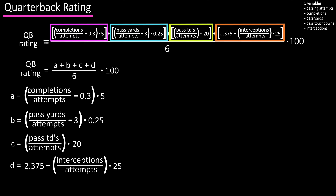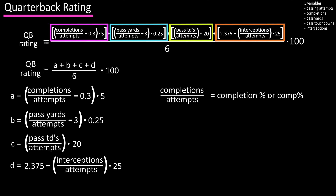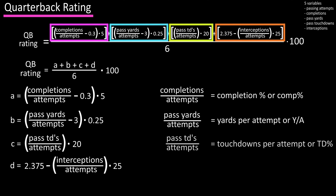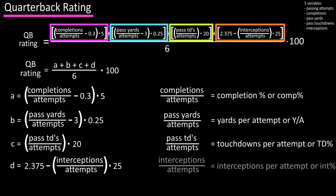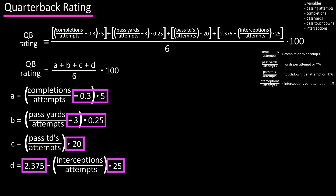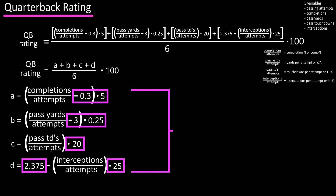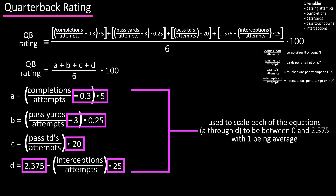These equations correspond to stats you've probably heard before: equation A is completion percentage, equation B is yards per attempt, equation C is touchdown percentage, and equation D is interception percentage. The other numeric values in these equations are used to scale each equation to be between 0 and 2.375, with 1.0 in any of the equations being considered average.